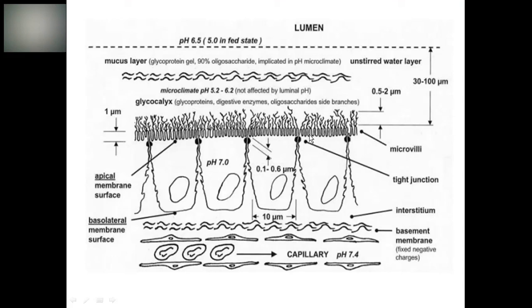The microvilli comprises of goblet cells which produce mucus. Along with the mucus and the glycocalyx, it produces an unstirred layer of around 30 to 100 microns within the lumen maintaining a pH of around 5.2 to 6.2. The mucus which is produced generally comprises of oligosaccharides rich in sialic acid and this too maintains the microclimate pH.